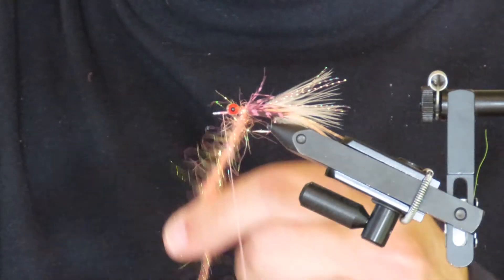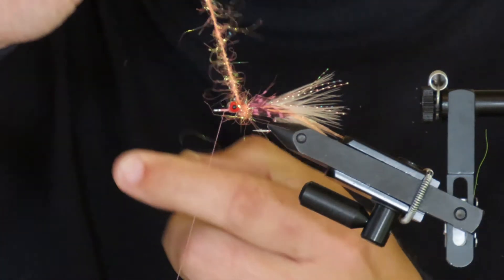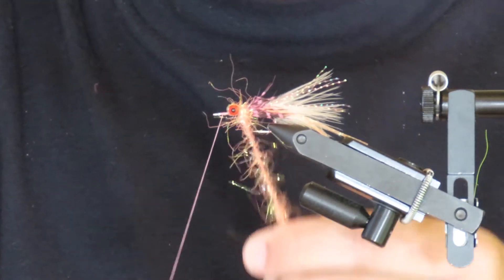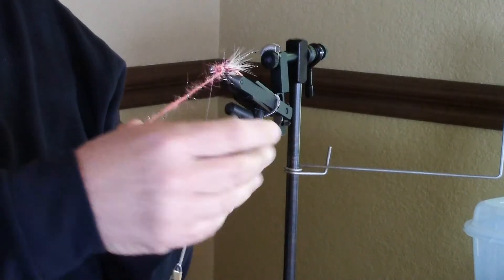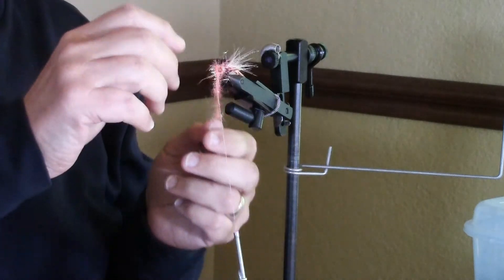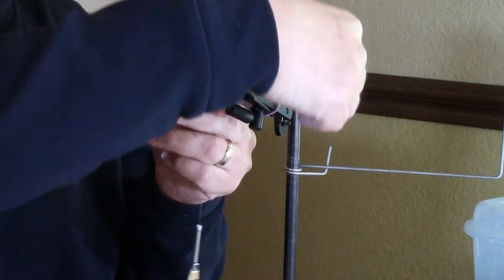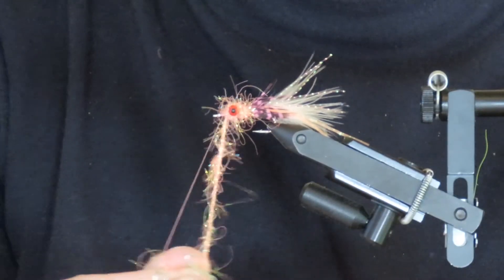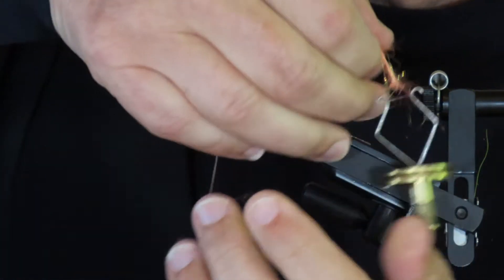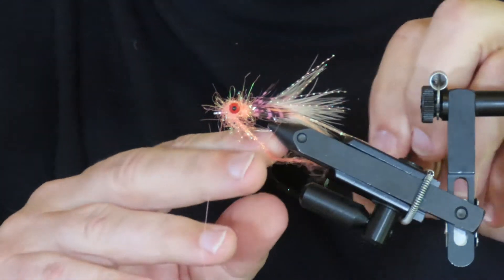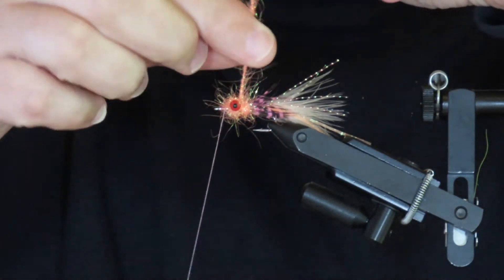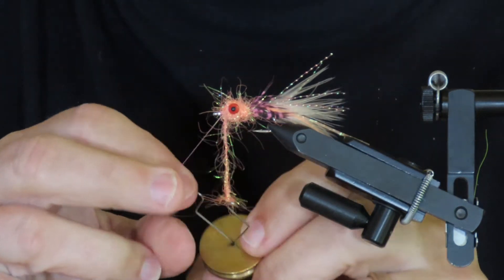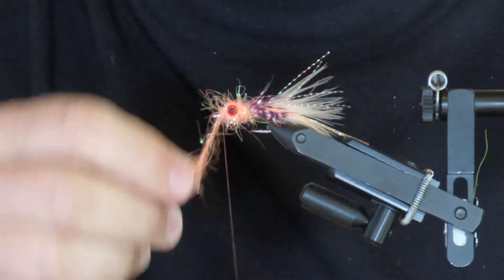Take about three or four turns behind the head before making figure-of-eight loops between the eyes, all around there. Just fill that space between the eyes and keep everything as tight as you can. If you hold the dubbing spinner, it's not going to unspin itself. Maybe one more figure of eight around there, and then I'm going to take just one or two turns in front of the eyes, like that.